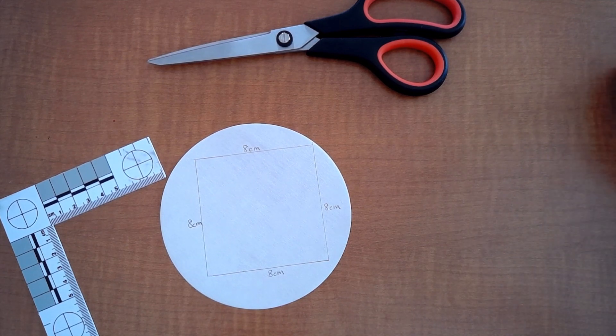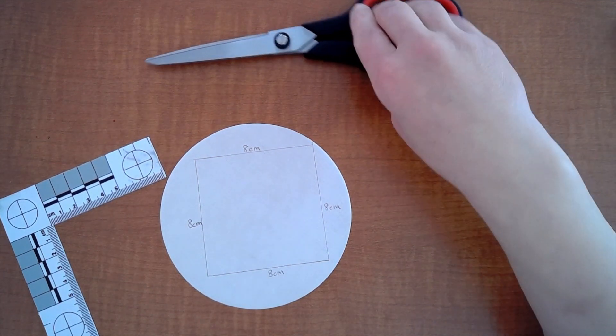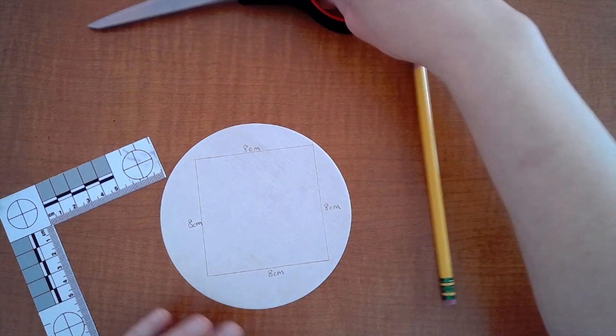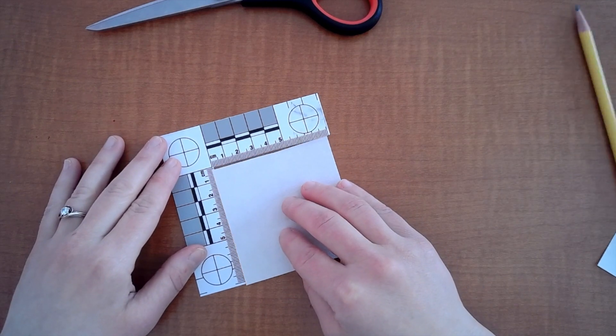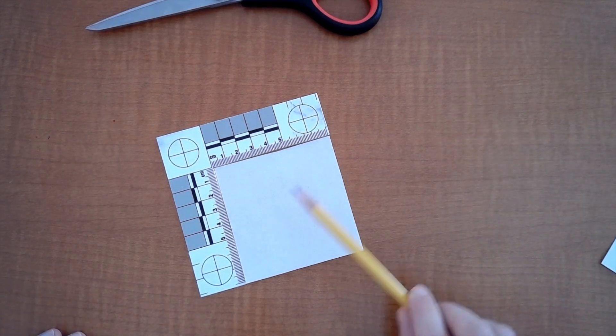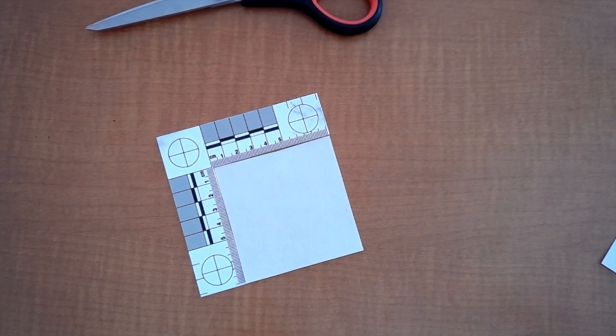Once you get your eight centimeter by eight centimeter square you're going to use your scissors and cut it out. And as you can see I have already done that and look it should fit perfectly. Eight centimeters by eight centimeters.